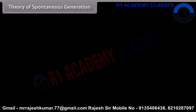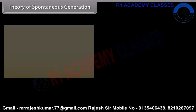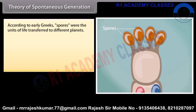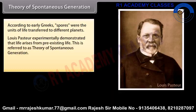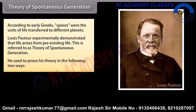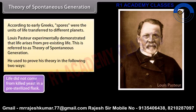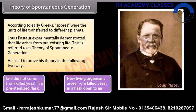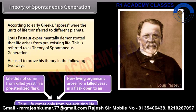Theory of Spontaneous Generation. According to early Greeks, spores were the units of life transferred to different planets. Louis Pasteur experimentally demonstrated that life arises from pre-existing life; this is referred to as the Theory of Spontaneous Generation. He proved his theory in two ways: life did not come from killed yeast in a pre-sterilized flask, but new living organisms arose from killed yeast in a flask open to air. Thus, life comes only from pre-existing life.